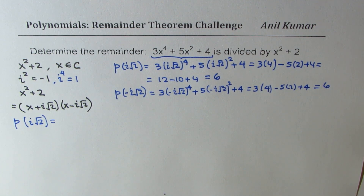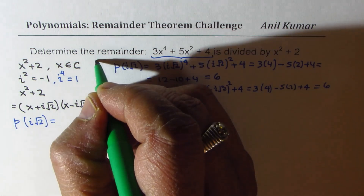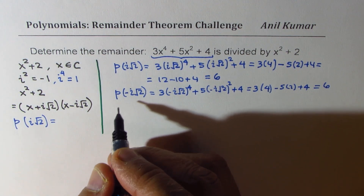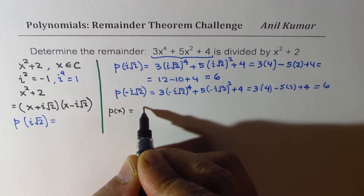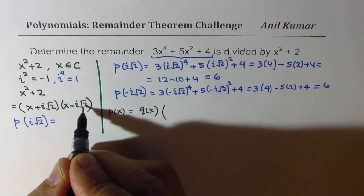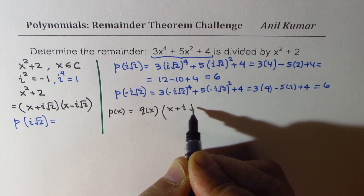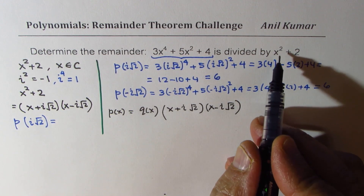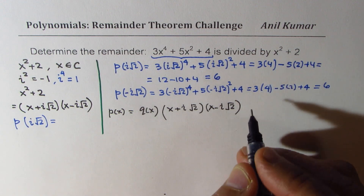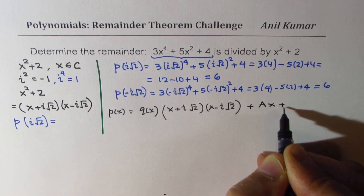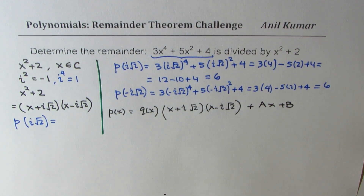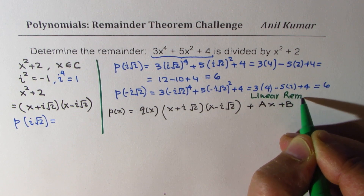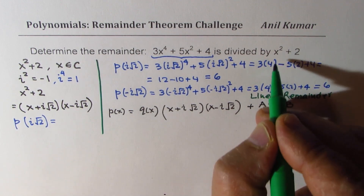Now we can use the division statement — that's the key. The polynomial p(x) can be written as the quotient times the two factors (x plus i√2)(x minus i√2), plus the remainder. Since the divisor is quadratic, the remainder will be linear — of the form Ax plus B. So we expect a linear remainder.